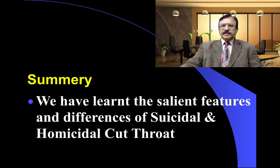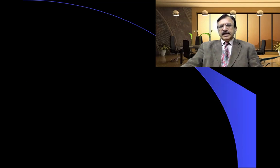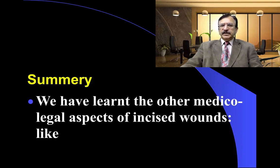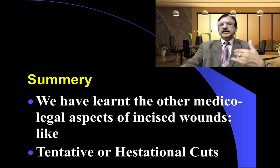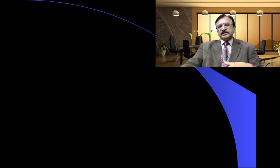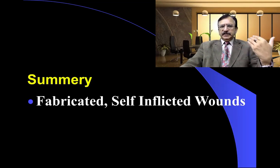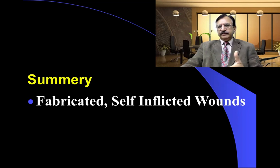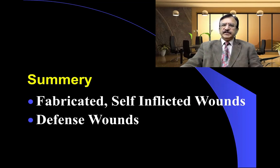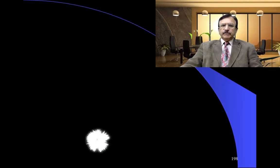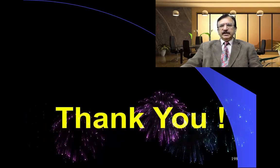In summary, we have learned the salient features and differences in suicidal and homicidal cutthroat, the other medical legal aspects of incised wound including tentative or hesitational cuts, fabricated or self-inflicted injuries and their salient features, and the defence wound. Thank you very much. Take care.